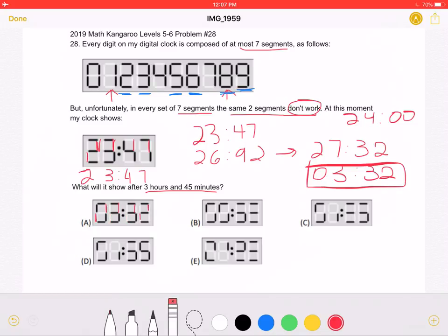we can see that we can make 03:32, which is the time we want. So that means that answer choice A must be correct.